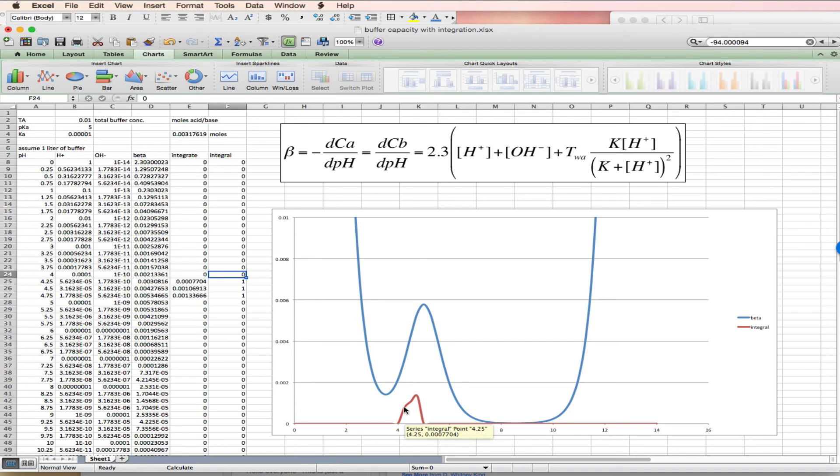Now you'll notice it takes, doesn't take as much acid to change the pH because I'm moving down this curve until I get to about a pH of 3.5, at which point the proton becomes a decent buffer.